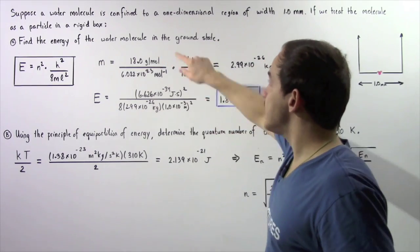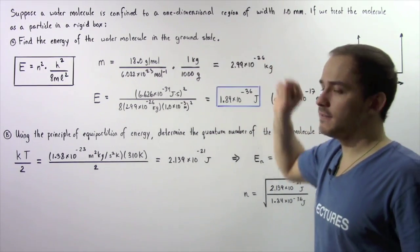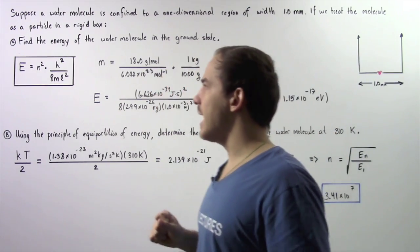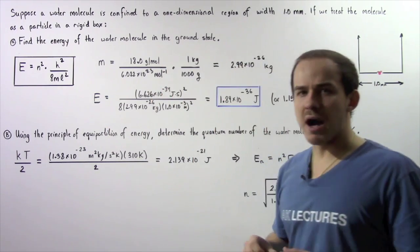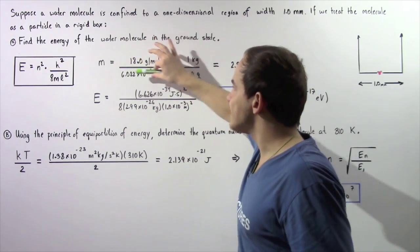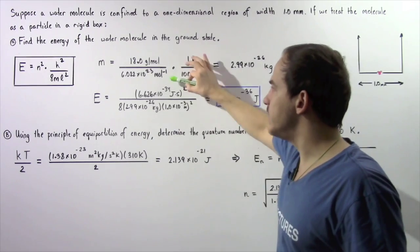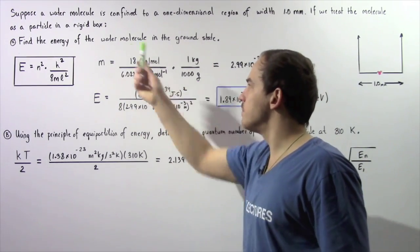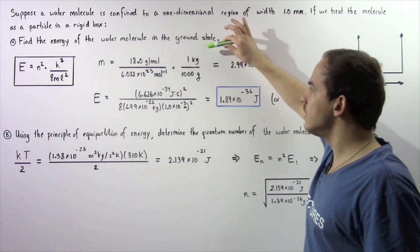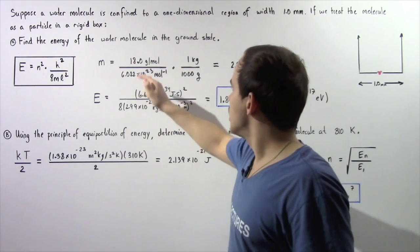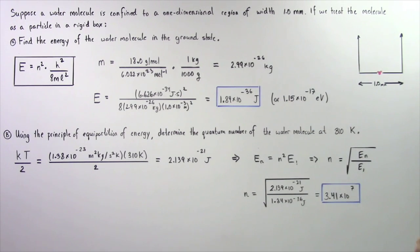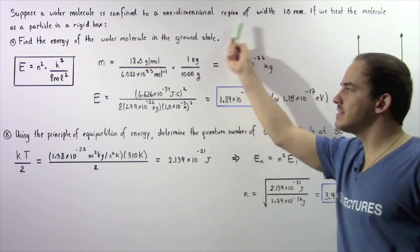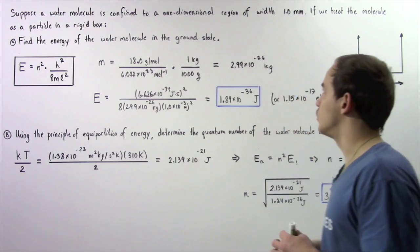Because it tells us that the water molecule is in the ground state, the quantum number N is equal to one. To find the mass of the water molecule, we take the mass of water in grams per mole, divide by Avogadro's number, and multiply by one kilogram per 1,000 grams. The grams and moles cancel, leaving us with about 2.99 times 10 to the negative 26 kilograms — the mass of a single water molecule.